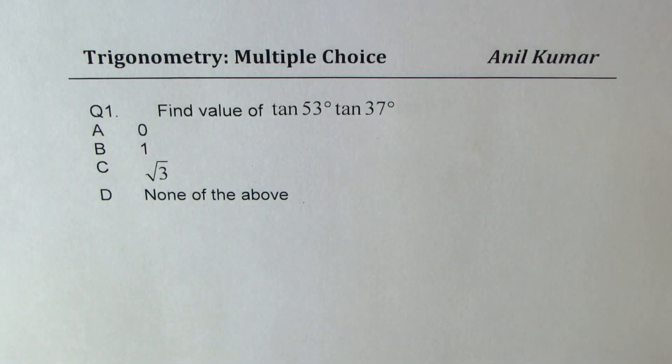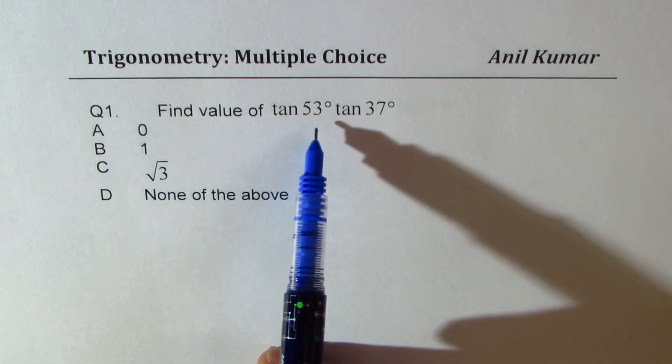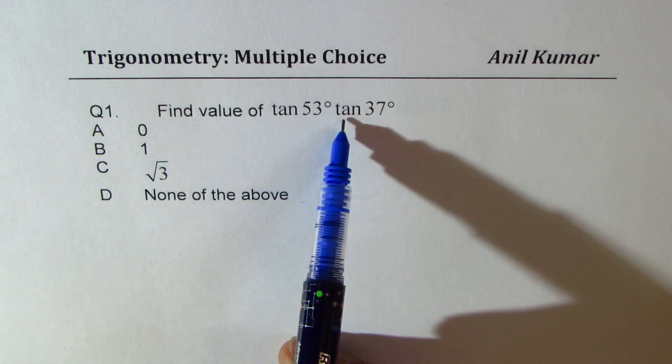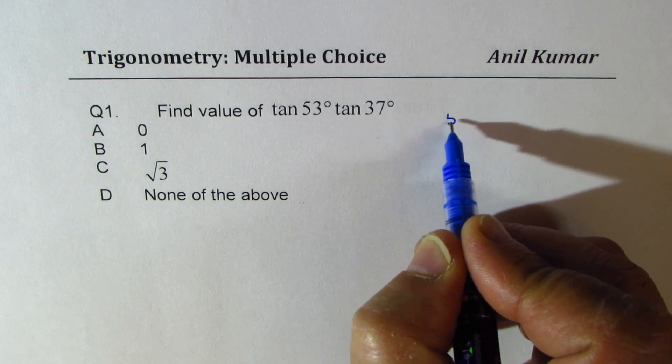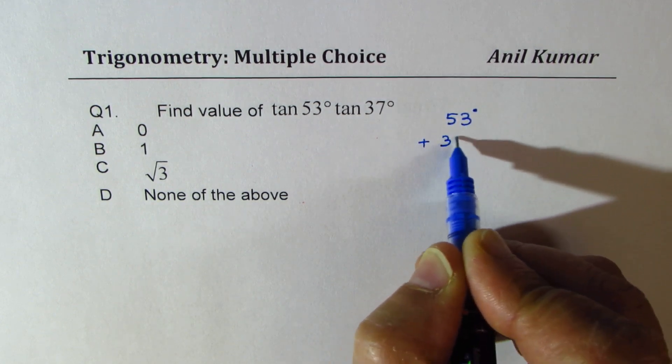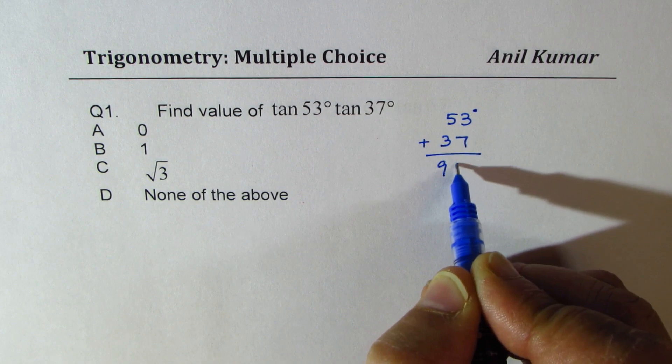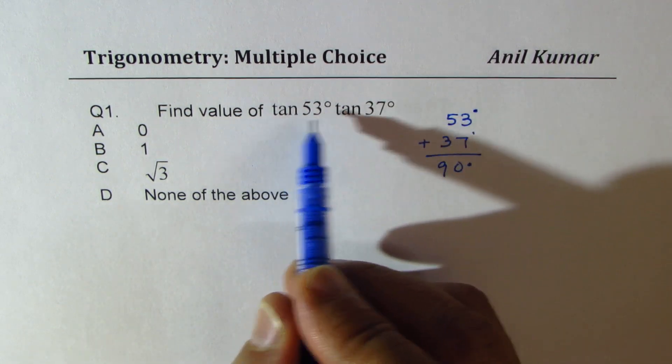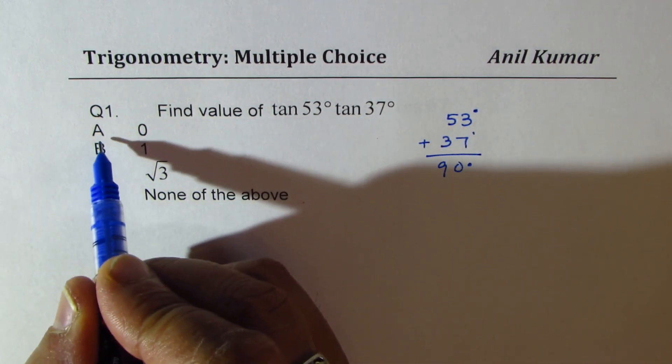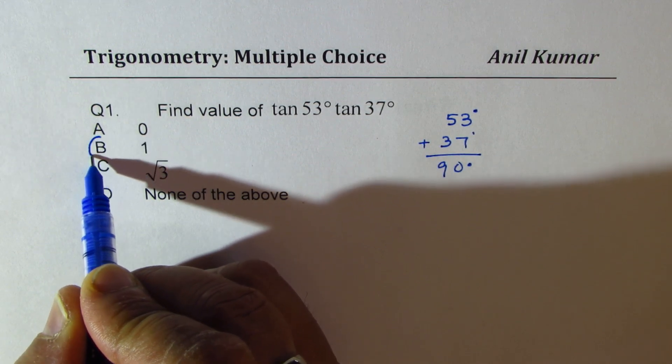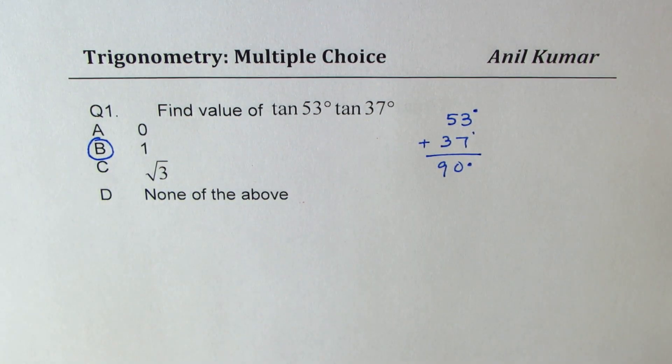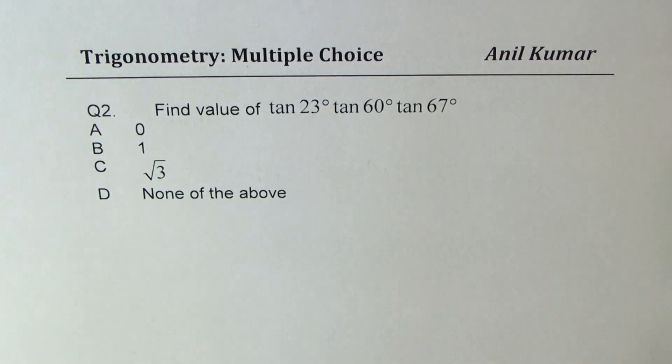So let's apply this trick and quickly answer a few questions. We need to find value of tan 53 and tan 37. Now, since 53 degrees plus 37 degrees is 90 degrees, what should that be? Well, we know that should be 1. So immediately, if you have similar question in any competitive exam, you can easily get your answer.